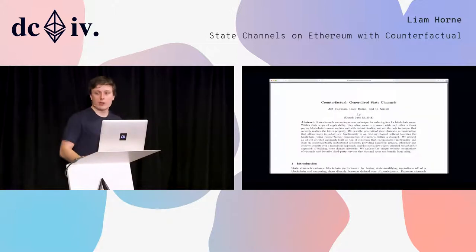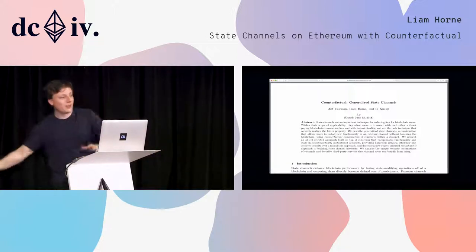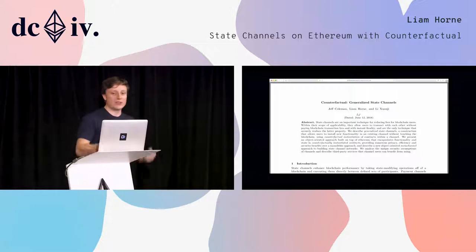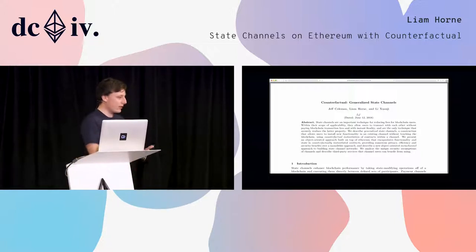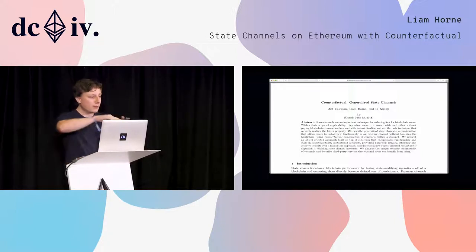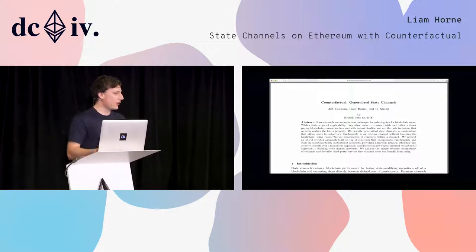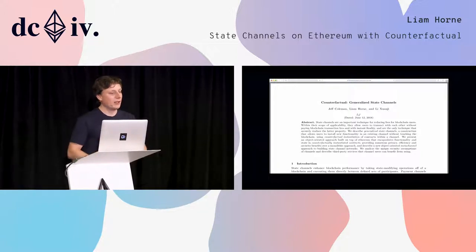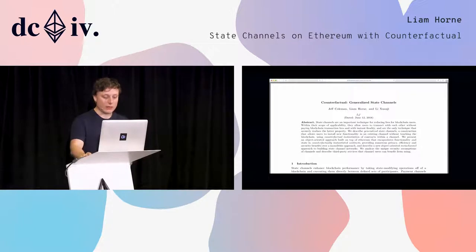So we started off by writing this paper, which is basically the formal version of the post that Jeff had put out. It goes in a ton of depth on how you can do this: what are the security models you need to be thinking about, what are the general parameters you want to be aiming for, how can you maximally have off-chain interactions using state channels for any application — a very abstract notion, but one that if you can get right enables an enormously powerful technique.